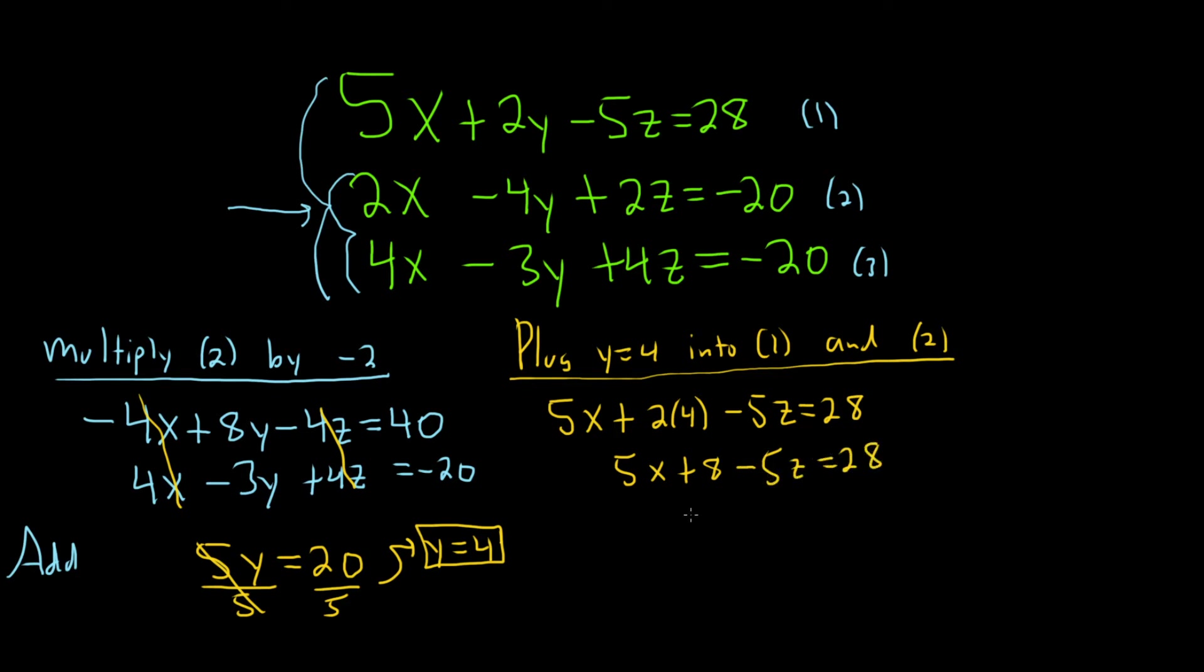5x plus 8 minus 5z equals 28. We can subtract the 8. That will give us 5x minus 5z equals 20. That's pretty nice.